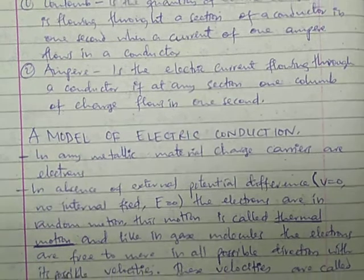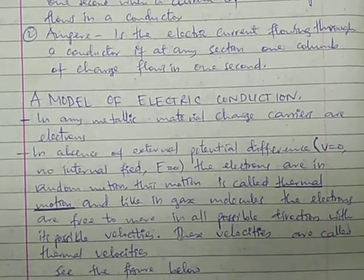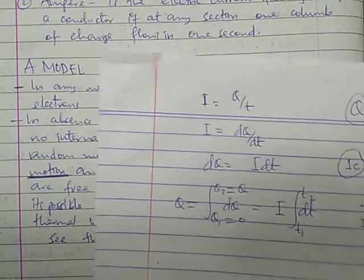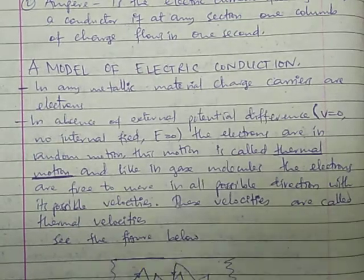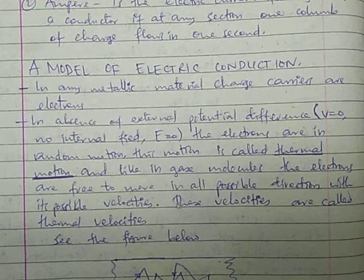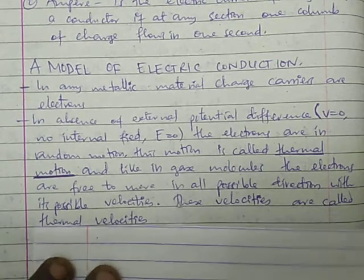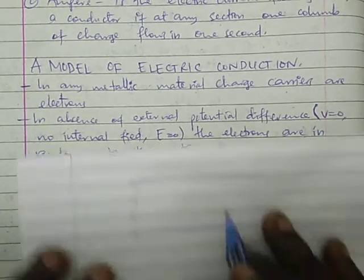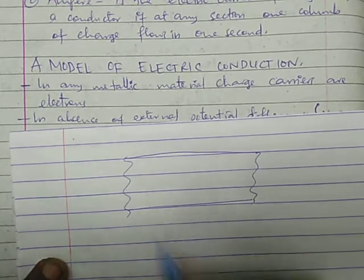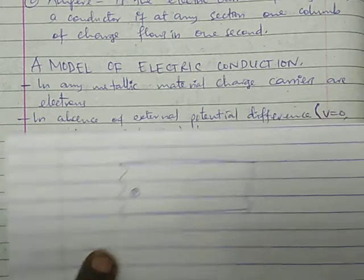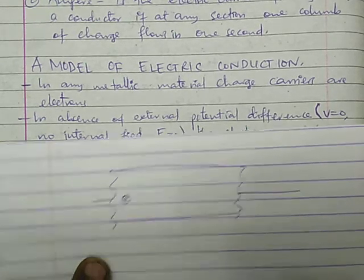Now let's discuss the model of electric conduction — how electric charge is conducted through a conductor. As we know, and as we shall discuss later in electronics, we have three types of materials: conductors, insulators, and semiconductors. In conductors, we have the flow of electrons. If we draw the conductor, the electron undergoes random motion when there is no charge applied.